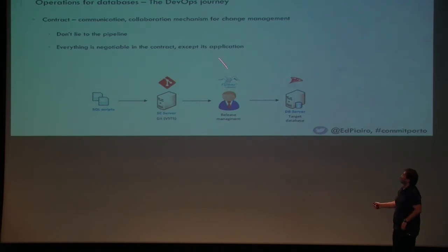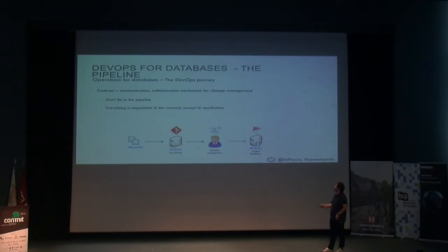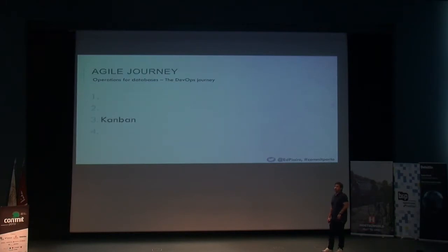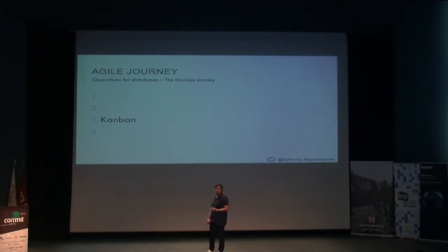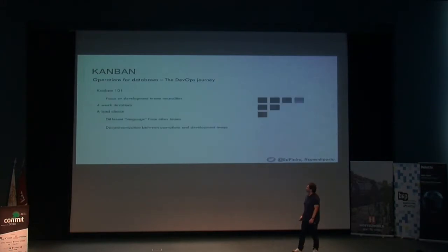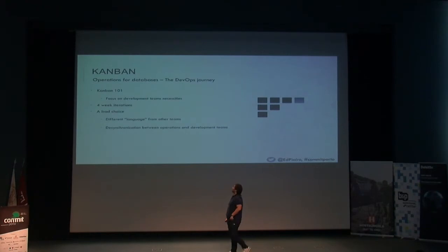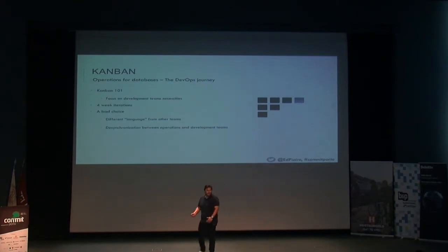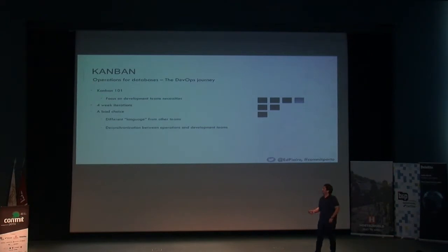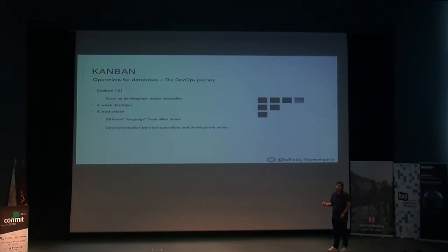So as you see, we started to build the first block — source control for the migrations, the database changes. And then that feeling of: we are an operations team. Scrum shouldn't be for us. Why do we need a sprint goal? Why are we reacting? We're supposed to react. So let's do Kanban. And we failed it miserably. Why? Because Kanban doesn't even have iterations. Why in hell did we think Kanban had iterations? It was a big mistake. And don't forget, this is a learning journey. At that time, we thought we should have iterations on Kanban.